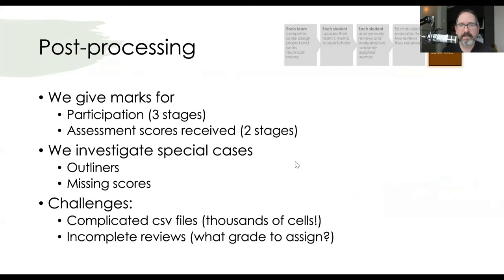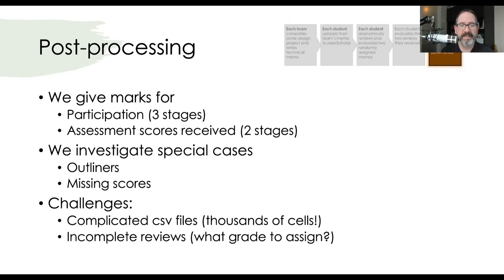For post-processing, I go through and do all of this myself, though it can be done automatically in Peer Scholar. I like to know exactly what's going on at the individual criteria level — one student evaluating another's work. There's a lot of data that comes out in the CSV file. We assign marks for participation and look at the rubric scores. Doing it this way allows us to identify outliers and find missing scores. The challenges: you're dealing with a lot of data. And as with any peer assessment, what do we do when somebody doesn't complete their assessment — how do we treat the individual who doesn't get any feedback on their work and has nothing to evaluate in the third phase?